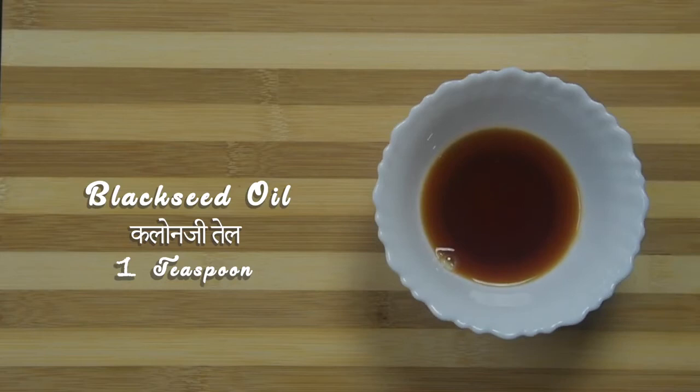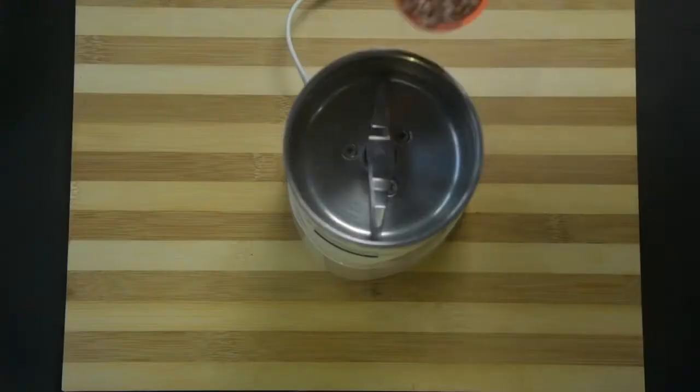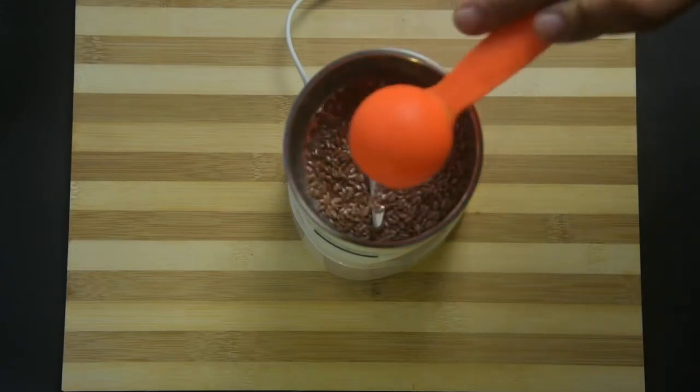black seed oil or kalonji oil, 1 tablespoon cold pressed flax oil. Take flax seeds into a coffee grinder or small jar of a mixer grinder.